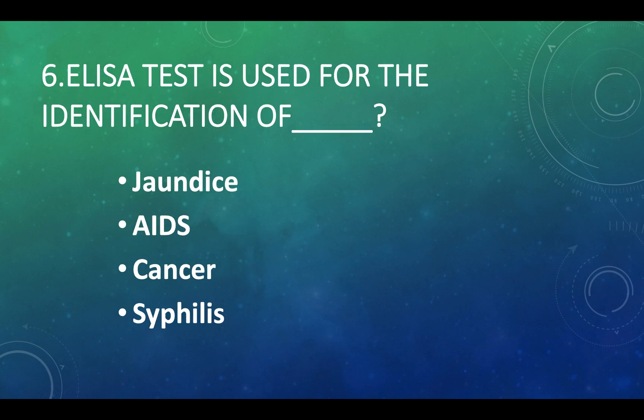ELISA test is used for the identification of: Option A — jaundice, Option B — AIDS, Option C — cancer, Option D — syphilis. Answer: Option B, AIDS.